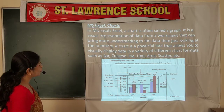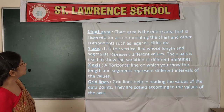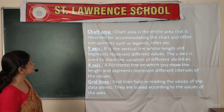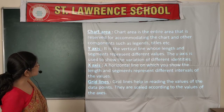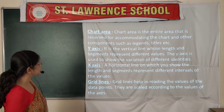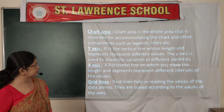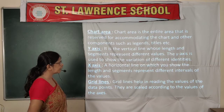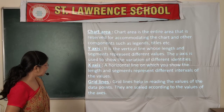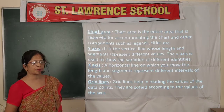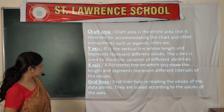These are the components of an Excel chart. The chart area is the entire area reserved for accommodating the chart and its components such as legend and title. The Y-axis is the vertical line whose length and segments represent different values; it shows the variation of different identities. The X-axis is a horizontal line where length and segments represent different intervals of values. Grid lines help in reading the values of data points and are scaled according to the axis values.